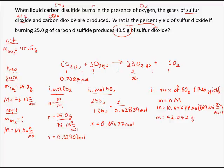Now, I'll just make a quick statement. And what I'll say here is that the maximum mass of SO2 possible is 42.1 grams.